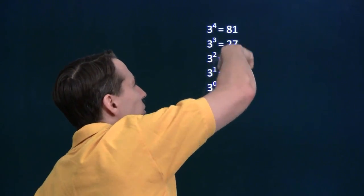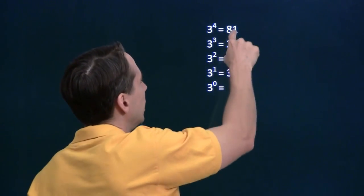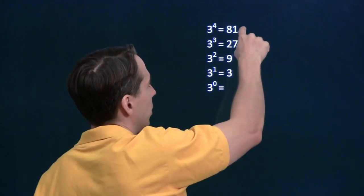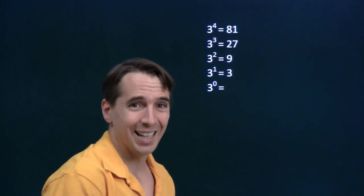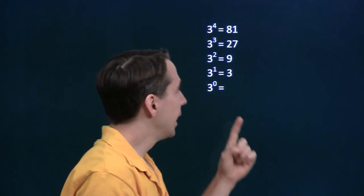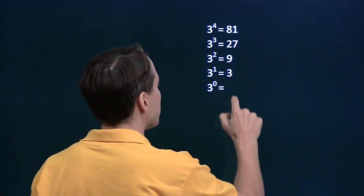But what happens if we look at this list going the other way, going down? Each step, instead of multiplying by 3, we're dividing by 3 when we go down. 81 divided by 3 is 27, 27 divided by 3 is 9, 9 divided by 3 is 3, 3 divided by 3, if we want to go down one more step, is 1.